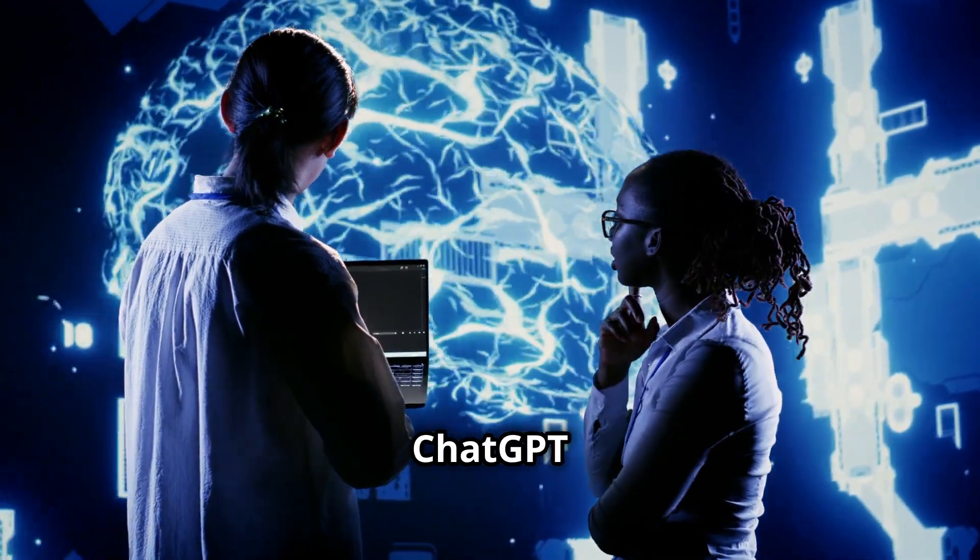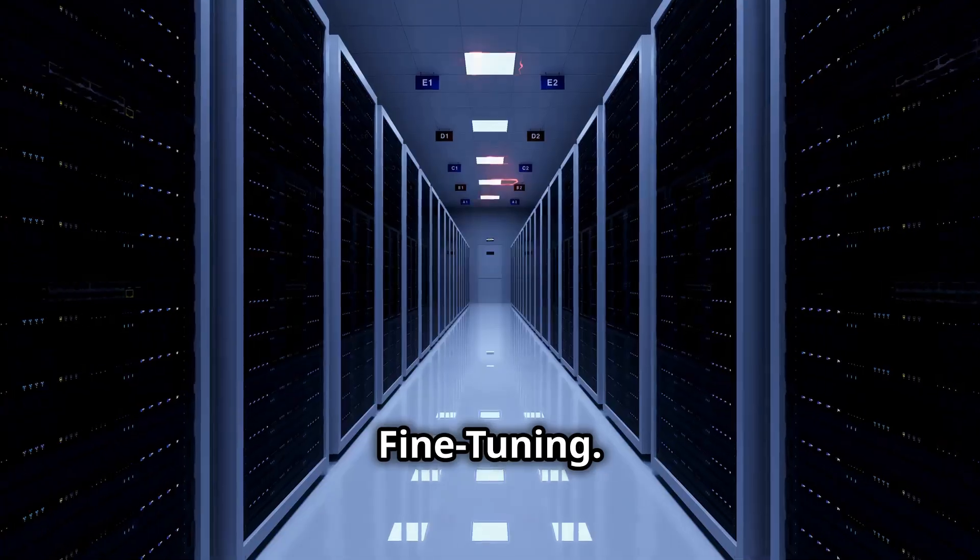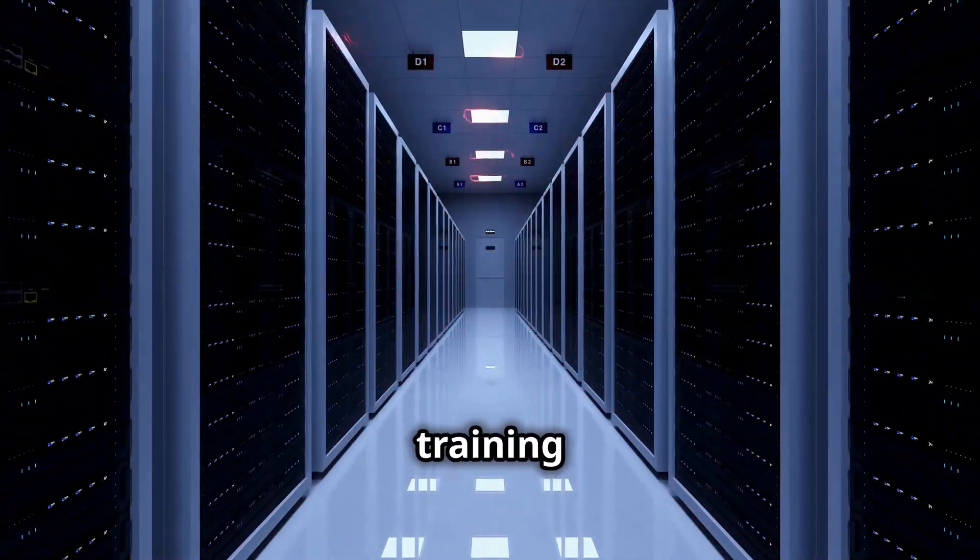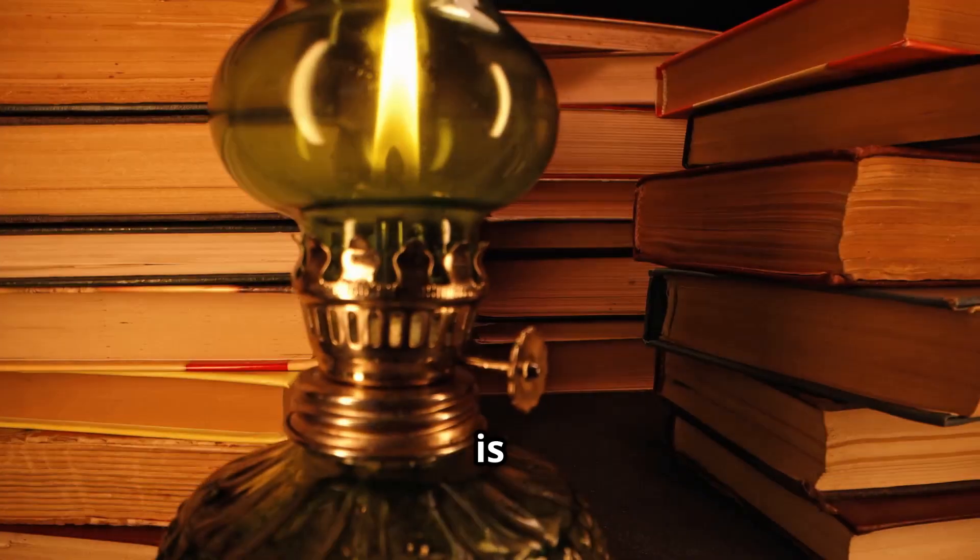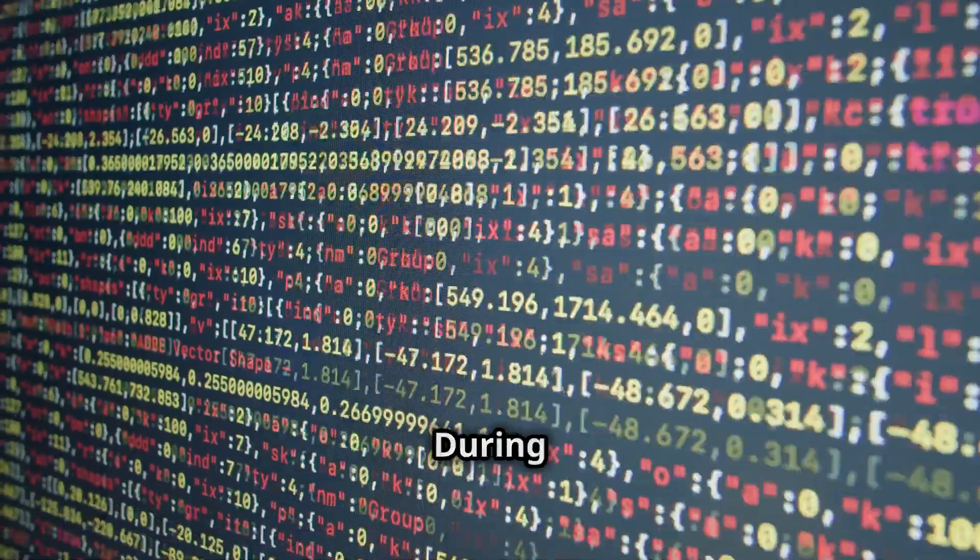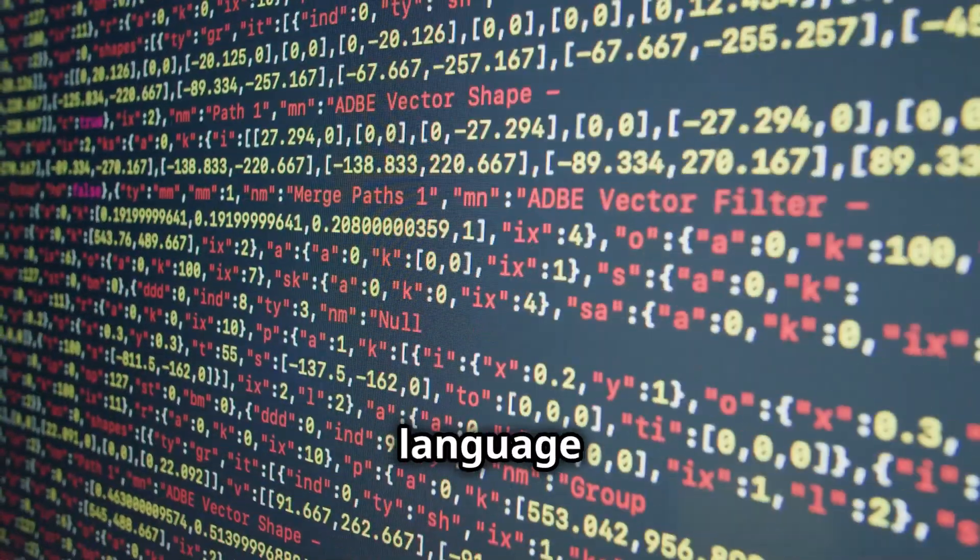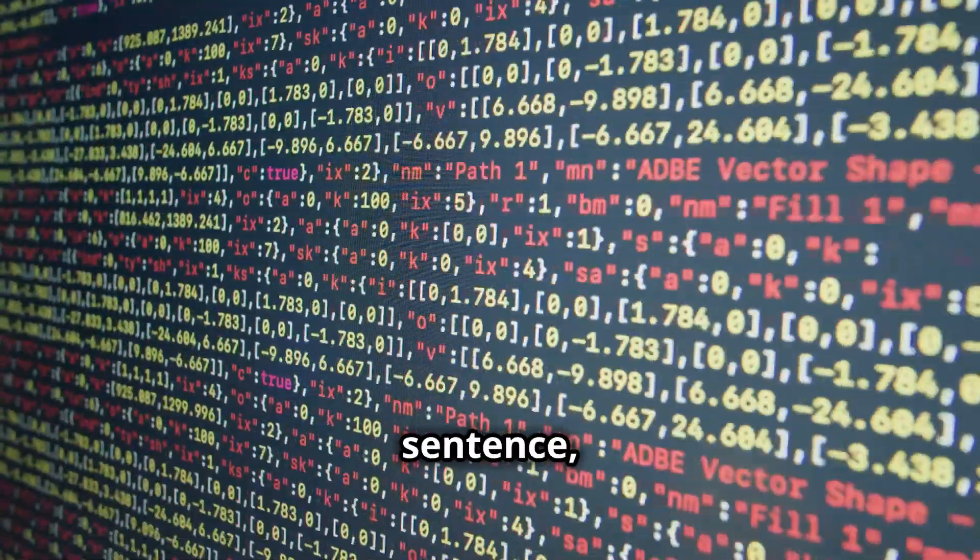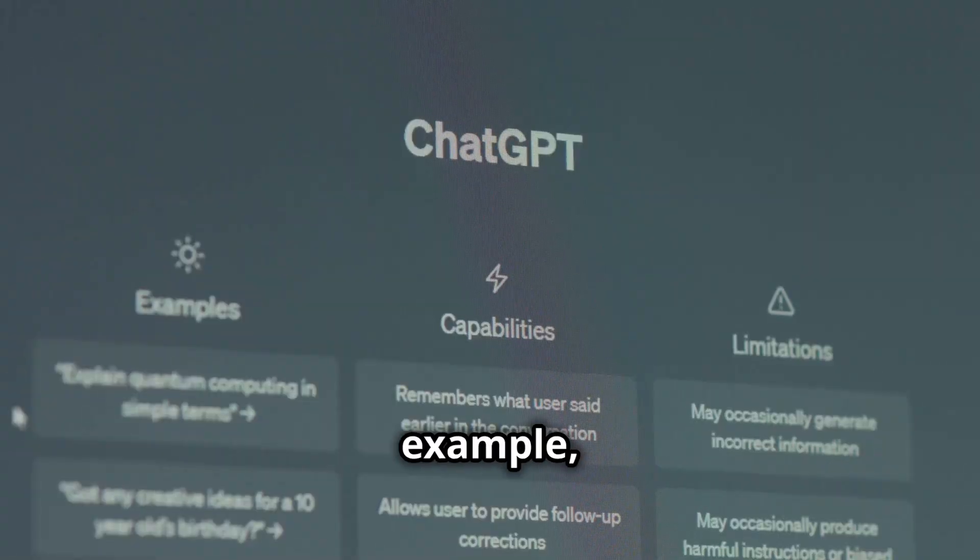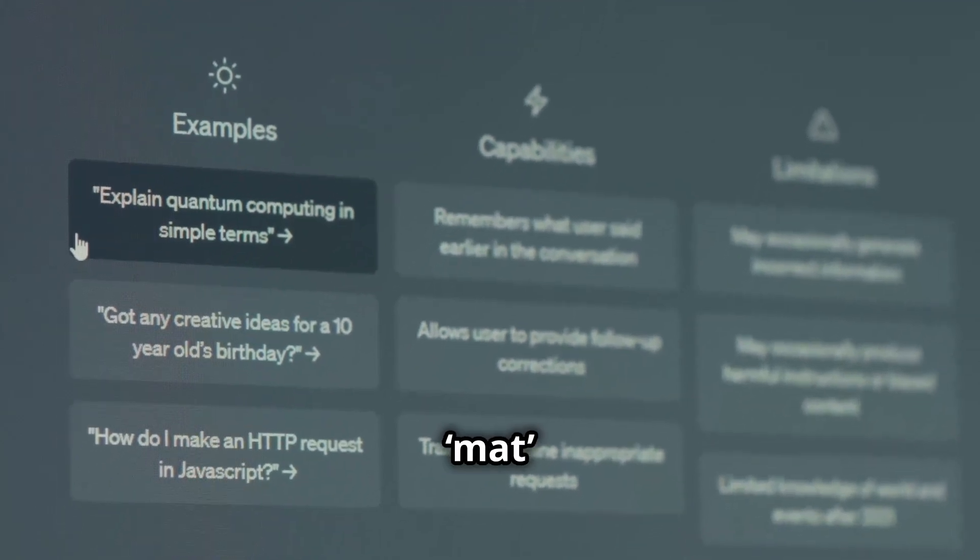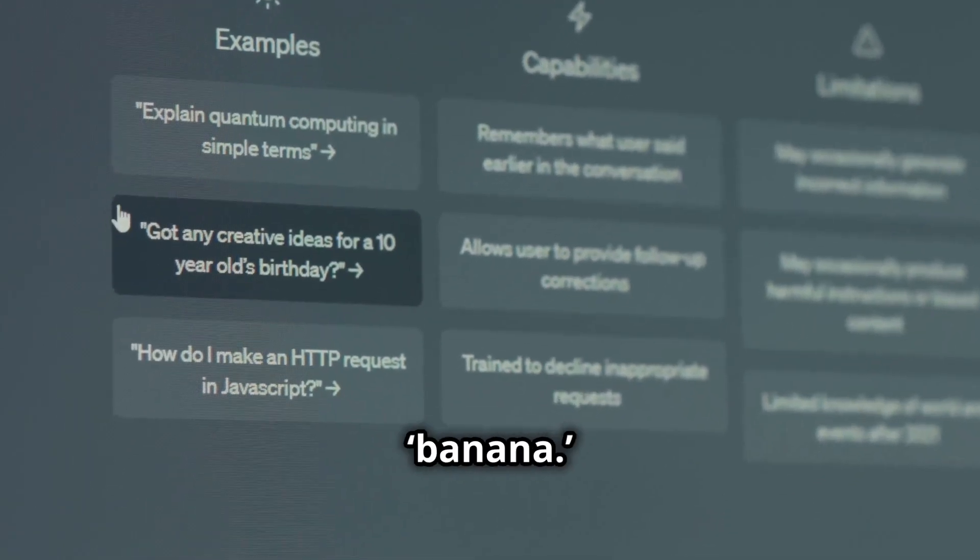Two, training ChatGPT: pre-training and fine-tuning. To become this smart, ChatGPT goes through two key stages of training. A, pre-training. This is where the model is fed an enormous amount of text from various sources. During this phase, the model learns language basics - how words fit together, how ideas flow in a sentence, and common patterns and associations. For example, it learns that the cat is on the is usually followed by mat, and not something random like banana.